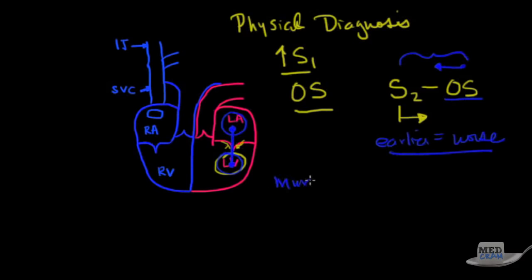Now the murmur itself is best heard at the apex. You may even want to get the patient in the left lateral decubitus position, but what you're going to hear is a low-pitch rumbling diastolic murmur. This is the same murmur that you might want to call an Austin Flint if you're seeing aortic regurgitation. So low-pitch diastolic rumbling murmur.